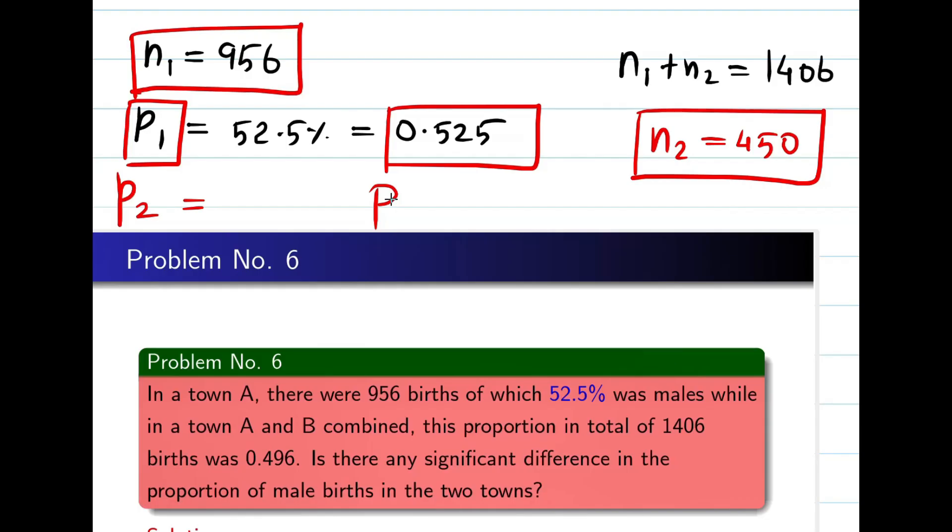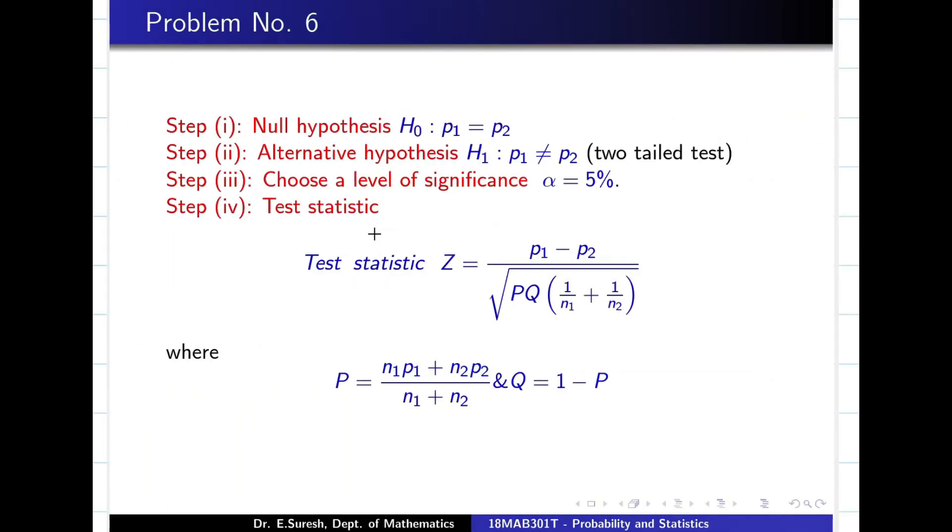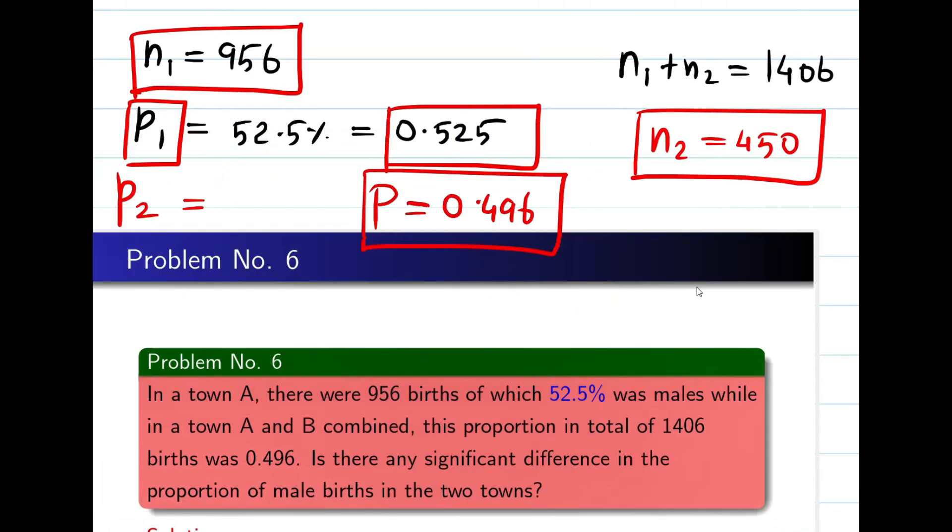The whole proportion they are giving birth as 0.496. That means capital P is given whole city, for A and B together, the birth proportion was given as 0.496. You should not think all the time capital P you have to find. Sometimes P1, P2 also they can tell you to find. In the question they say, is there any significant difference between proportion of male? If you see the word difference, H0 is going to be P1 equal P2, there is no difference. H1, I say there is a difference. This is two-tail test. The problem is little different. Capital P is given 0.496. P1 is given, N1 is given, N2 is given. We have to find P2.